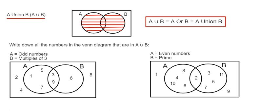Today I'm going to show you how to write down all the numbers in a Venn diagram which are in A union B. So A union B means all the numbers which are in set A or B.